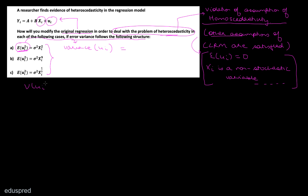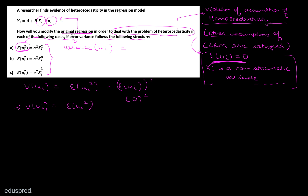Using the formula for variance, Var(ui) = E(ui²) − [E(ui)]². Since we assume E(ui) = 0, the second term is zero squared, which means Var(ui) = E(ui²). This is why the question refers to the structure of the error variance, but writes E(ui²) in the parts — you should understand that E(ui²) is nothing but Var(ui).